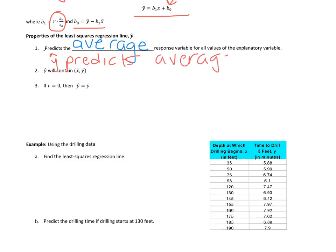Y hat will always contain the ordered pair x̄, ȳ, the means of the two variables. And then if r equals zero, the linear correlation coefficient equals zero, that means there is no relation between the variables. So whatever value of x, the explanatory variable we plug in, the response is just going to be the mean.